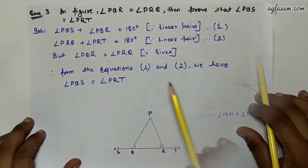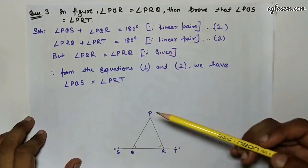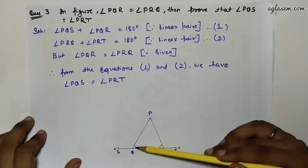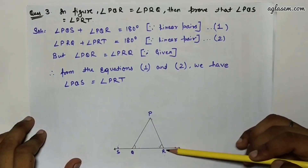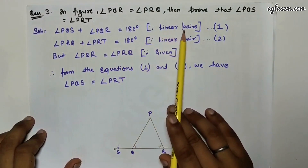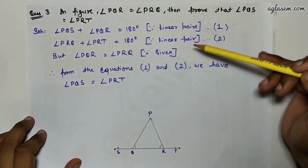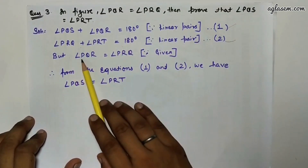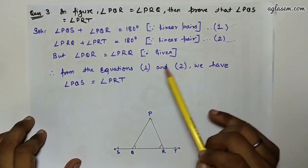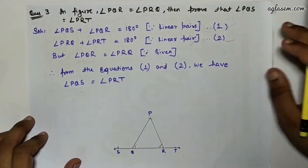Question 3: In the figure, angle PQR = angle PRQ. Prove that angle PQS = angle PRT. Since angle PQS + angle PQR = 180° (linear pair) and angle PRT + angle PRQ = 180° (linear pair), and angle PQR = angle PRQ (given), therefore angle PQS = angle PRT.